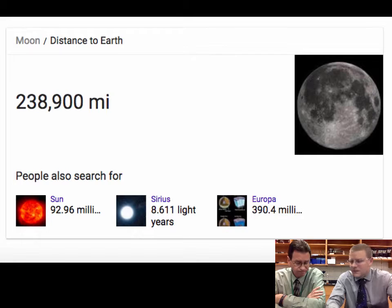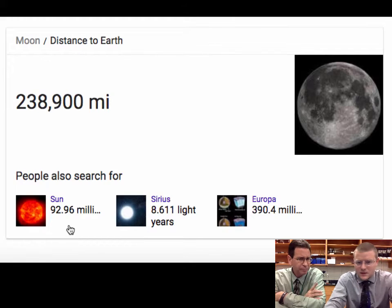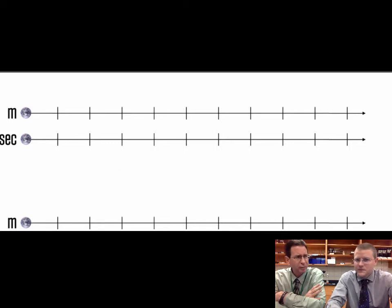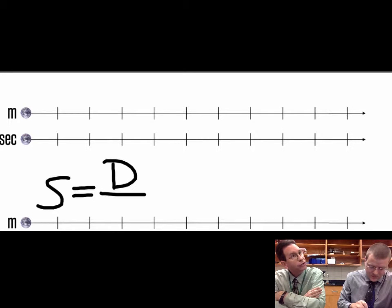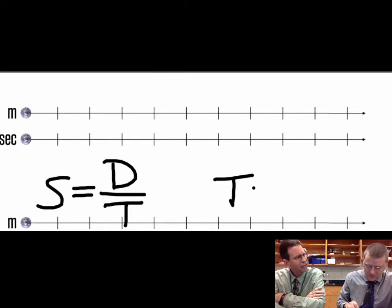Now we know the speed of light, and we also know the distance to some object. Right. So if we take the formula, if we manipulate the formula, speed is equal to distance over time, we end up with time is equal to distance over speed of light. So if we just take that value that you just found and divide it by the speed of light, we should get a time in seconds.